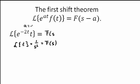a is negative 2. So we get F of s plus 2, because the negative negative makes it a positive. Now that means we simply take F of s and replace s by s plus 2. This is the shift along the s-axis. So what we get is 1 over (s plus 2) squared.